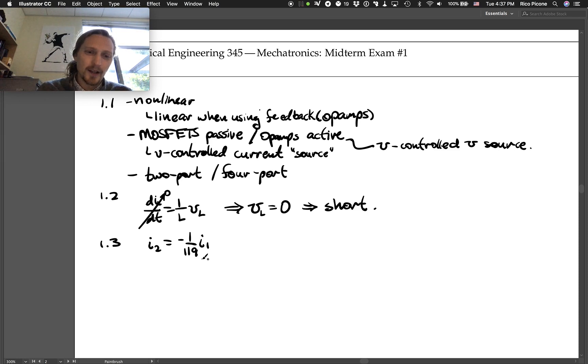So effectively the current out of the transformer is going to be negative one over 119 times the input current. If you just said one over 119 I gave you credit for that, but it is technically a negative reciprocal, so just the direction that's flowing. But the idea is you're trading off voltage and current with the transformer. So if you step up the voltage by 119, you step down the current by 119.